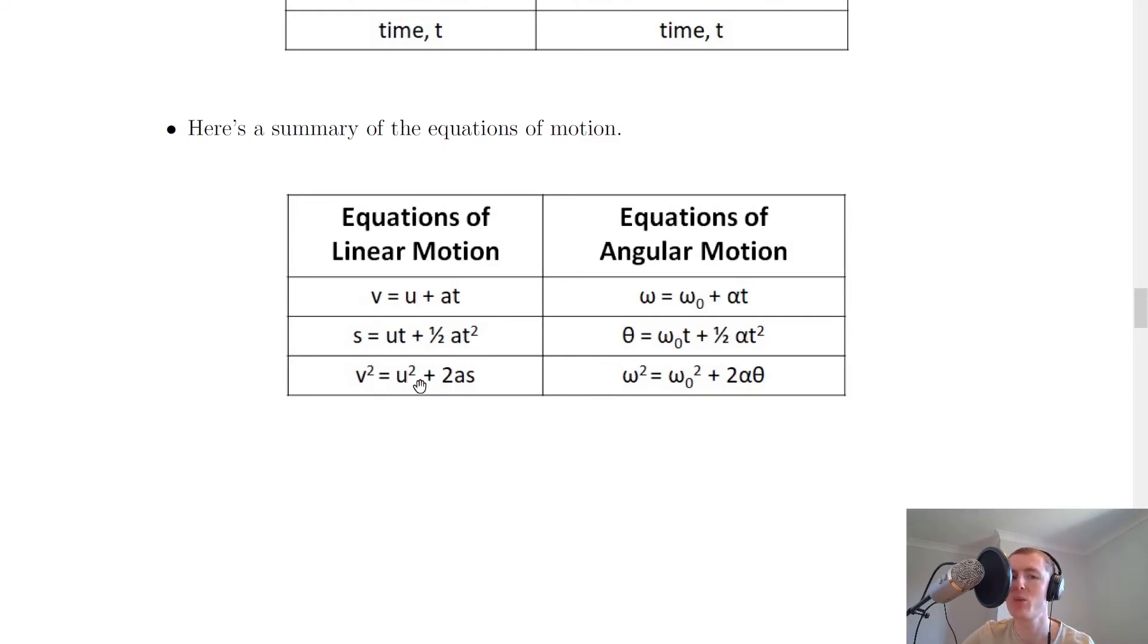And lastly v squared equals u squared plus 2 as for linear motion. And omega squared equals omega 0 squared plus 2 alpha theta for angular motion.